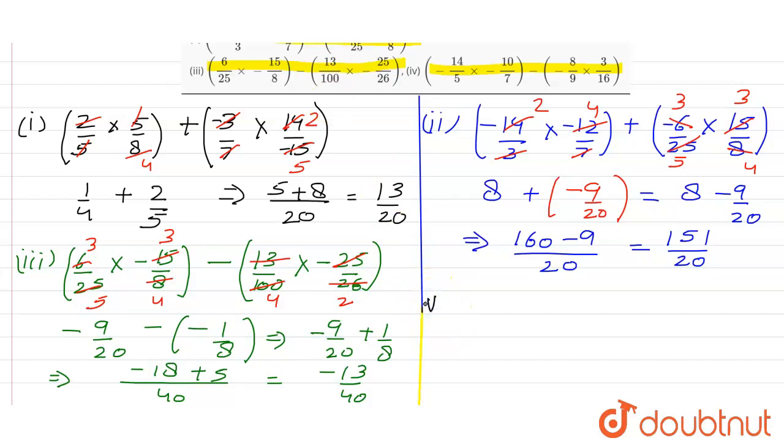Okay, so let's write it down. What is the fourth part? In this they gave us minus 14 by 5 multiplied with minus 10 by 7 in one bracket.